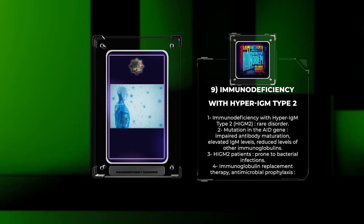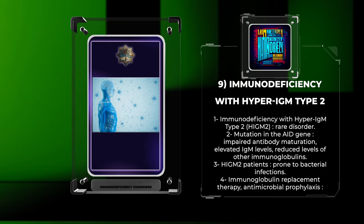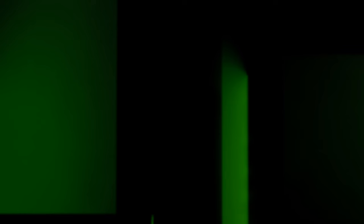Immunodeficiency with hyper-IgM type 2 (HIGM2) is a rare disorder caused by a mutation in the AID gene. This leads to impaired antibody maturation, resulting in elevated IgM levels and reduced levels of other immunoglobulins. HIGM2 patients are prone to bacterial infections and require immunoglobulin replacement therapy and antimicrobial prophylaxis.